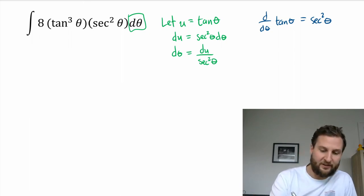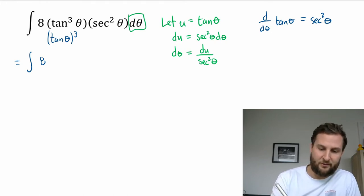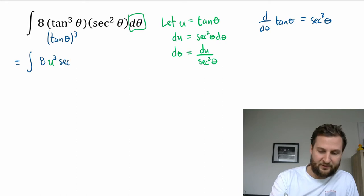So d theta equals du over secant squared of theta. And now we see that that secant squared is going to very conveniently drop out. So my integral now looks like 8 instead of tangent cubed - remember you could write this as tan theta all cubed with 3 like this - so this is going to be u cubed. So there's my substituted variable, it's going to be cubed, secant squared this one hasn't changed, and then instead of d theta I'm going to write...